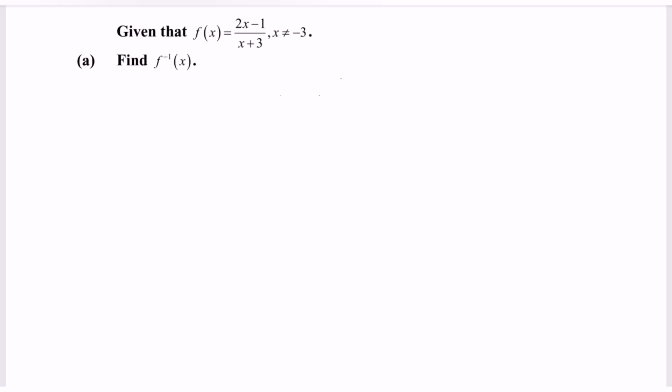Hi everyone, welcome to my channel. In this video, I'm going to discuss an example for function and graph. Given that the function is (2x minus 1) over (x plus 3), where x cannot be equal to negative 3.